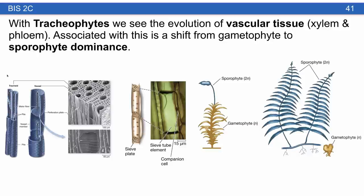With tracheophytes, we see the evolution of vascular tissue, which has two parts: xylem and phloem. Tracheids are the very thin parts of the xylem that conduct water. Vessel elements, present in one group of gymnosperms and most angiosperms, are much larger and can transport more water. The phloem has two parts: the sieve tube element, through which sugar flows, and a companion cell that regulates cell function since sieve tubes lack organelles.